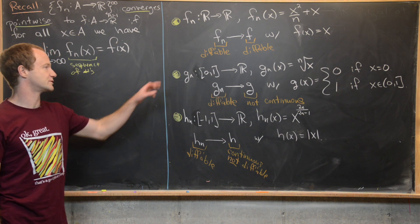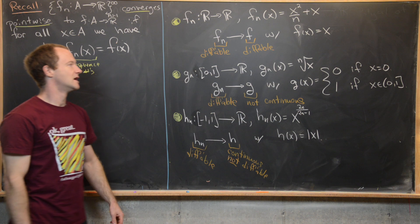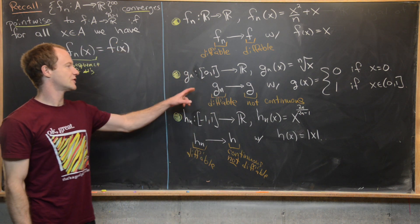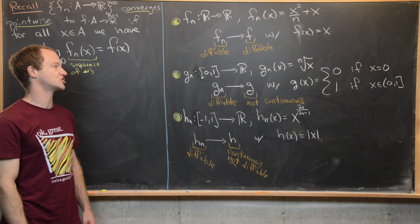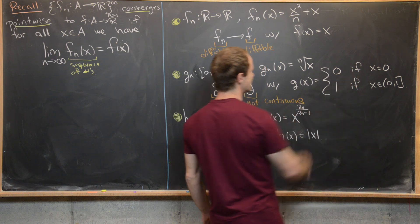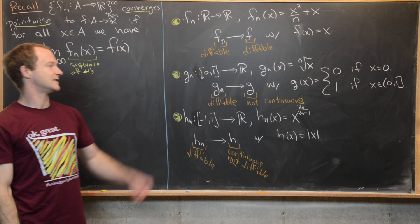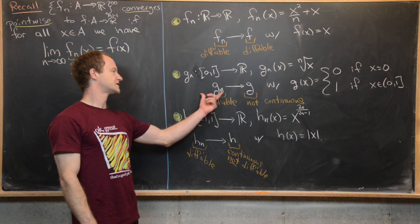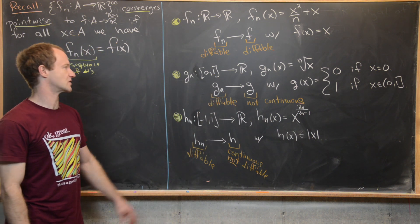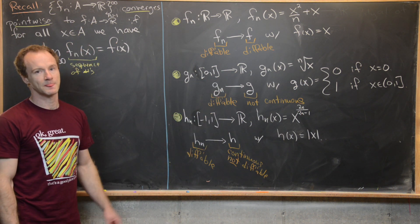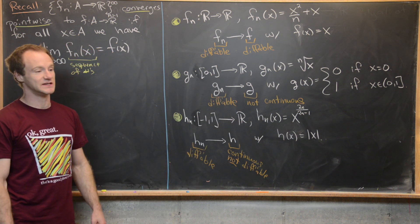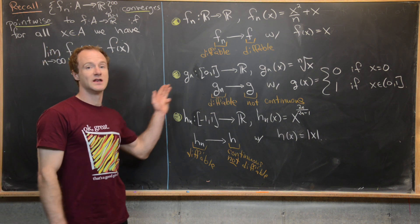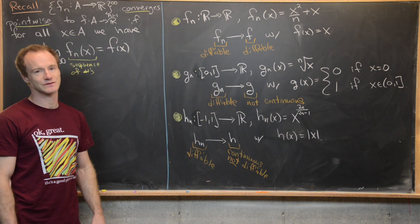Then we looked at the sequence g_n, from the interval [0,1] to the real numbers, where g_n(x) is the nth root of x. We showed g_n converges pointwise to a function g defined as 0 if x = 0, and 1 if x is in the half-open interval (0,1]. All the g_n functions are differentiable, but they converge pointwise to something that is not even continuous — a bummer, because none of the nice behavior was maintained.